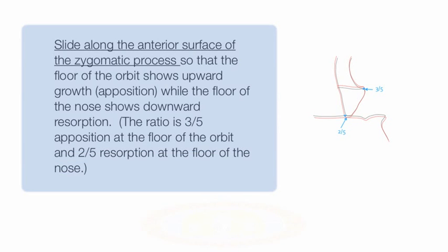In order to determine the correct vertical position of the tracing that is being superimposed, you should slide along the anterior surface of the zygomatic process so that the orbital floor shows apposition of bone and the nasal floor shows resorption of bone. There should be slightly greater apposition than resorption. Remember, the distance between the orbital and nasal floors increases during growth. Ideally, approximately three-fifths of the increase is due to apposition at orbitale, and two-fifths is due to resorption of the nasal floor.